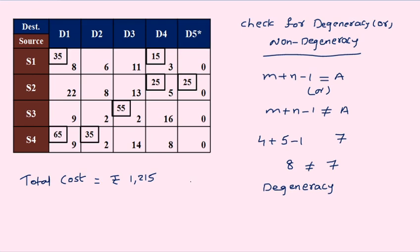But 1,215 is a feasible solution; it is not an optimal solution. So, for the process of identifying the optimal solution, the above matrix must be in non-DGNC form. Non-DGNC means m plus n minus 1 must be equal to A. To achieve that, we can convert this DGNC into non-DGNC using the concept of loops.